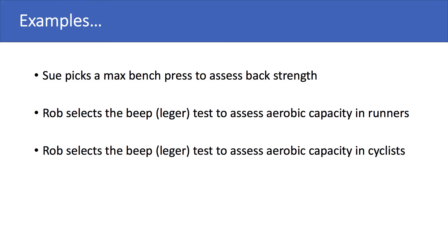Now let's look at some examples of validity. First, Sue picks a max bench press to assess back strength. A max bench press utilizes the pec muscles, so it's not a good indication of back strength — that would provide poor validity. Second, Rob selects the BEEP test, or the Leger test, to assess aerobic capacity in runners. The BEEP test is designed to assess aerobic capacity and it is a running-based test, so this would be a valid test selection — it measures what it's supposed to measure.